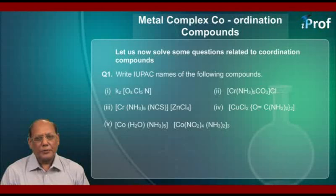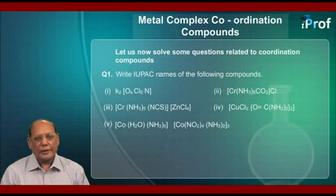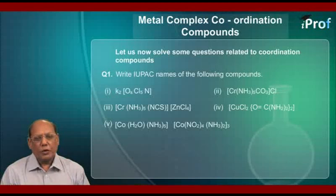The fourth is a non-ionic complex with the formula CuCl2(=O)(NH2)2(NH2)2. The fifth one has in the first bracket: Co, H2O, NH3 whole five; and the complex anion in the second bracket is Co(NO2)4(NH3)2, whole three.